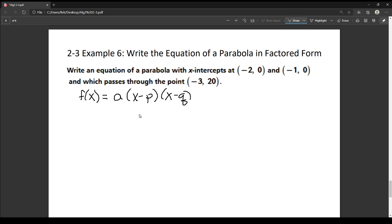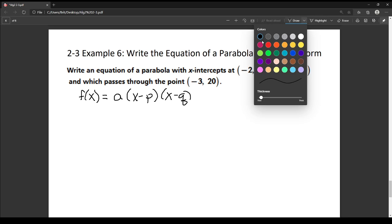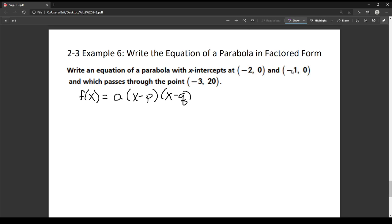Alright, so the p and the q are the zeros of the function. So the first thing that I need to do is I'm going to start with these x-intercepts and I'm going to turn them into factors.